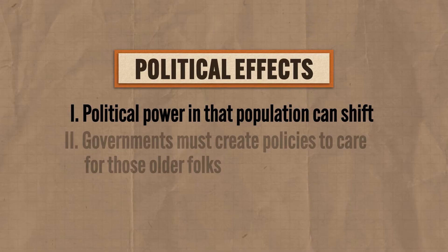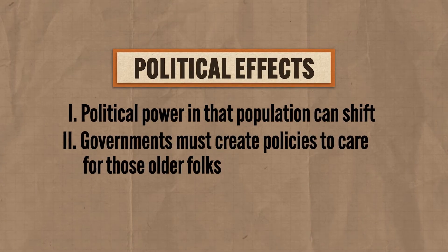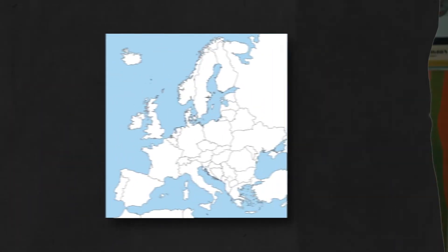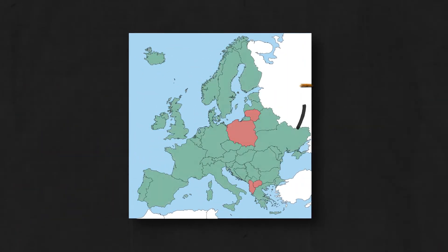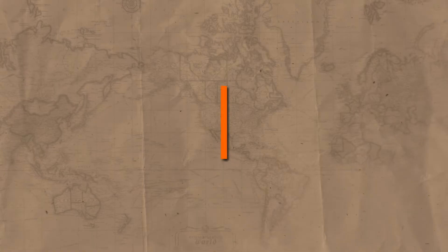Another example of political consequences: as a population ages, governments must create policies to care for those older folks. This is especially true in many European countries that have government-paid healthcare systems. In those countries, the government pays for the healthcare of its citizens, and as more and more aging people need access to that healthcare, it gets way more expensive and puts a strain on the country's resources.